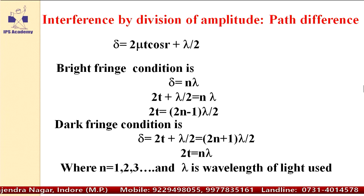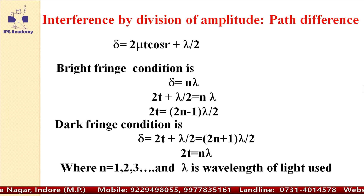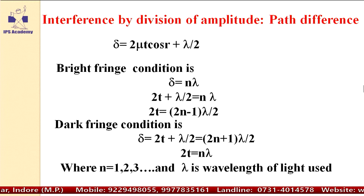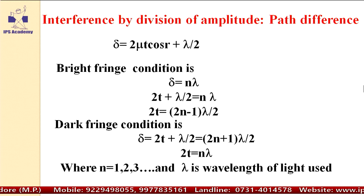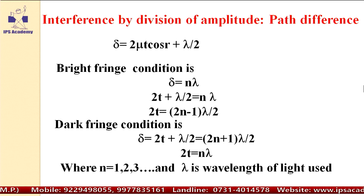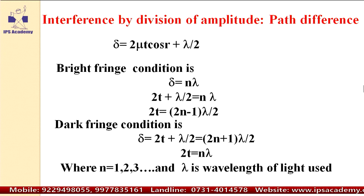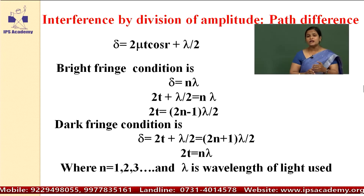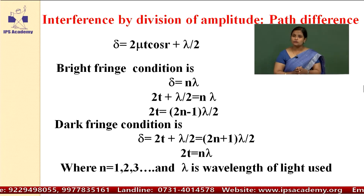So we have two conditions: one for bright fringe and another for dark fringe. The bright fringe condition is 2t equals (2n minus 1) lambda by 2, and the dark fringe condition is 2t equals n lambda.